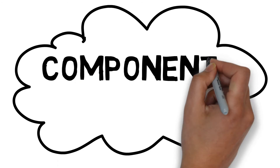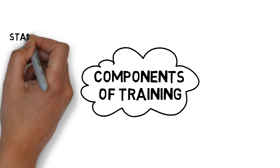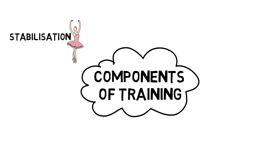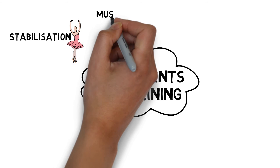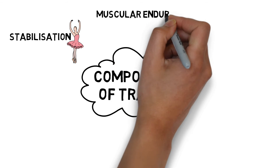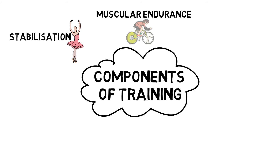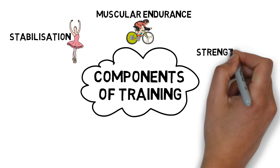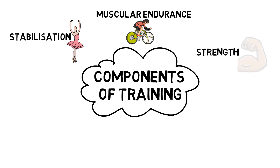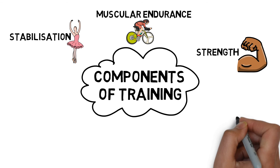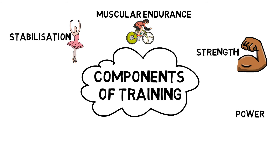Components of training include: stabilization, which is the ability to get the right muscles to fire at the right time with the right amount of force in the correct plane; muscular endurance, which is the ability to produce and maintain force production for prolonged periods of time; strength, which is the ability of the neuromuscular system to produce internal tension to overcome an external load; and power, which is the ability of the neuromuscular system to produce the greatest force in the shortest time.